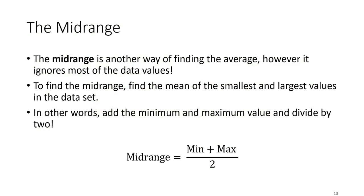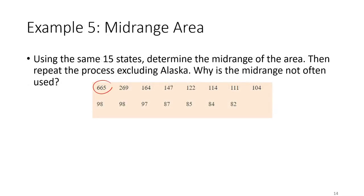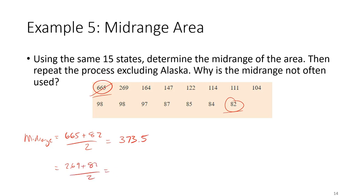Another measure of average is the mid-range, which is the mean of the smallest and largest numbers in the data set — minimum plus maximum divided by 2. For the state areas, 665 plus 82 divided by 2 gives a mid-range of 373.5. Without Alaska, 269 plus 82 divided by 2 gives 175.5. Although the mid-range is easy to calculate quickly, it ignores most of the data values and is not a great measure of the average — in both cases it's greater than every value except one.